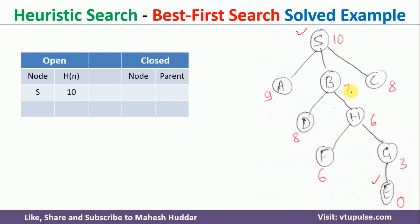The value 10 is the heuristic value of node S, indicating that 10 is the probable distance to reach the goal node E from S. Similarly, 7 indicates the probable distance to reach the goal node from B. The heuristic value from E to E is 0, meaning E is the goal node. We will now create two data structures as stated in the algorithm — open and closed — and put the start node S with its heuristic value into the open list. Nothing is present in the closed list initially.